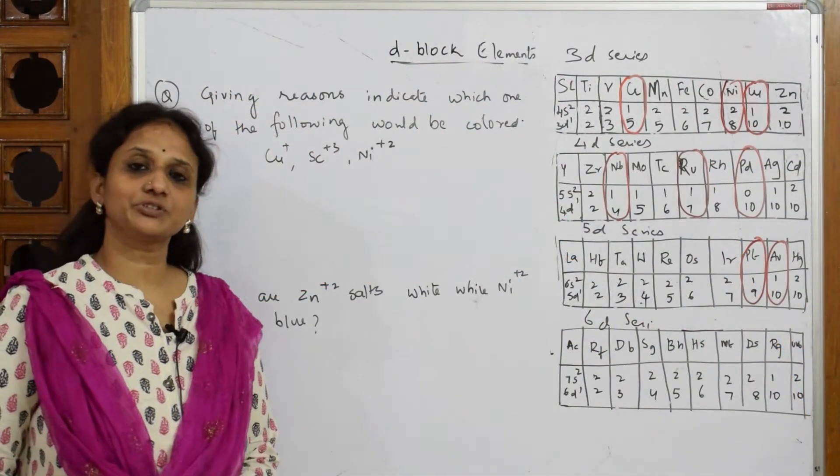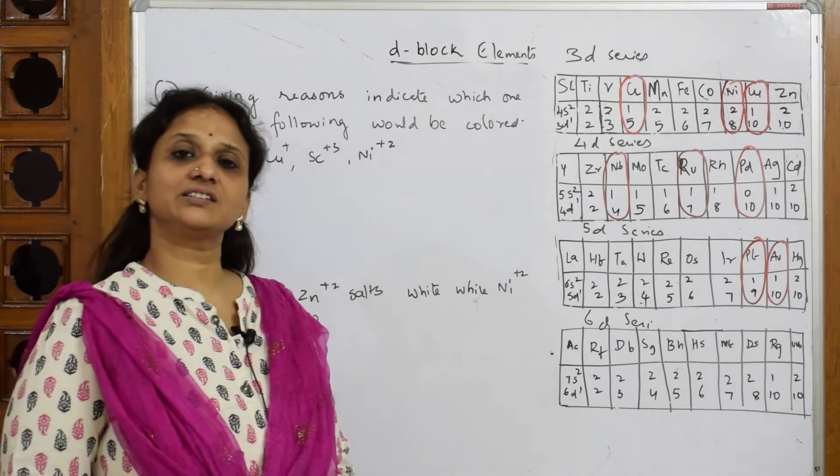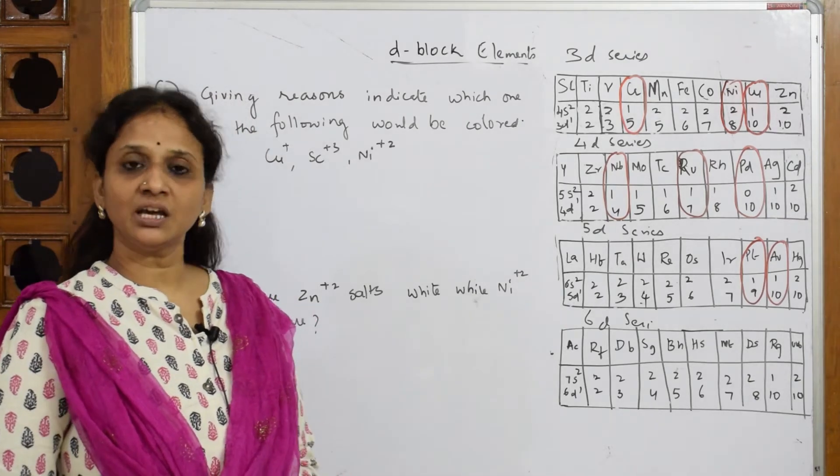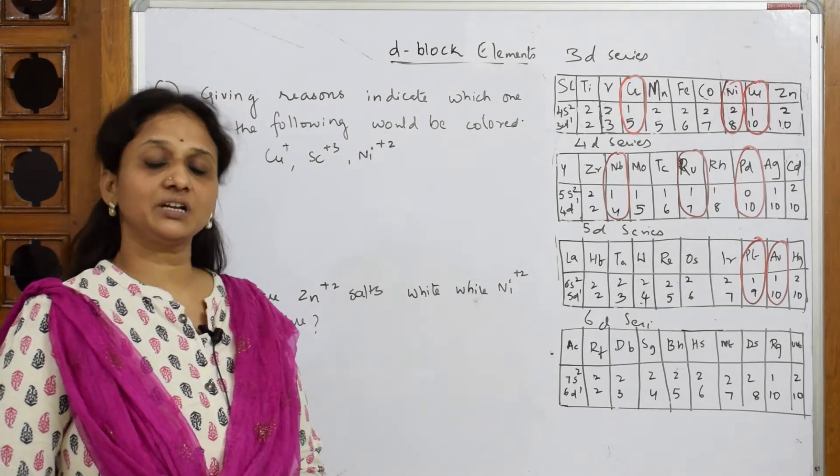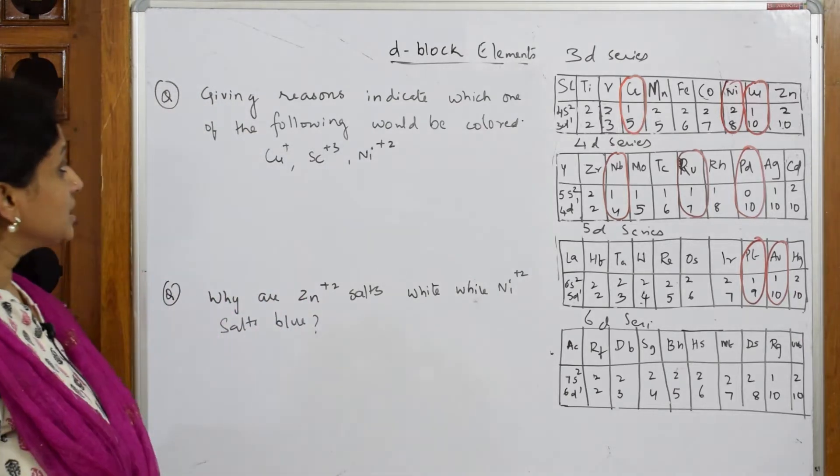Let us come back and see. Earlier I related ionization enthalpy with electronic configuration. Now I will be relating the color property with electronic configuration. Let's see how we can learn this.